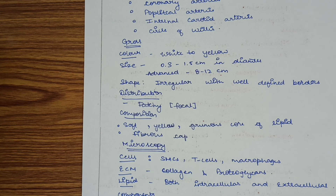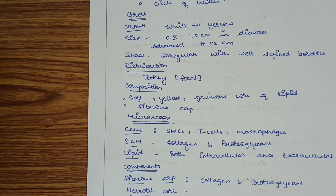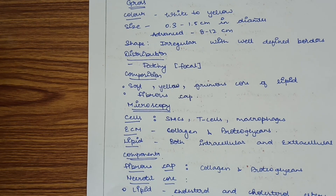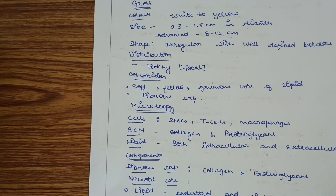The shape of the plaques is irregular with well-defined borders. Their distribution is patchy or focal, not uniformly distributed. Composition consists of a soft yellow grumous core of lipid and a fibrous cap — the fibrous cap and the necrotic/lipid core.